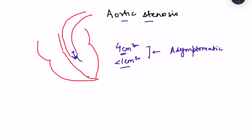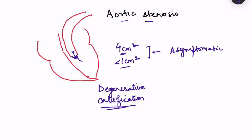What are the causes of aortic stenosis? The main pathological changes are degenerative calcification changes — degeneration of the valve leads to calcium crystal deposits on the aortic valve. With age, these degenerative changes occur, and they are generally seen at about 65 to 70 years of age.